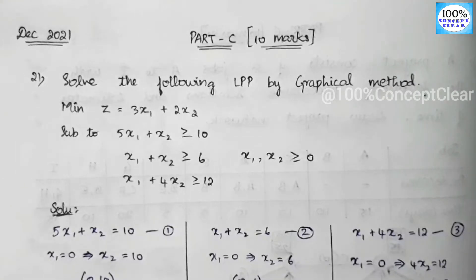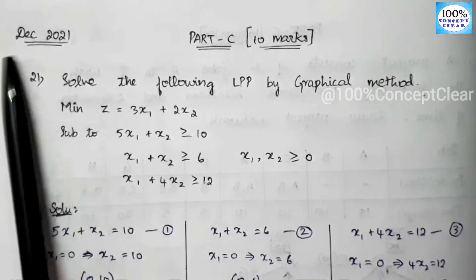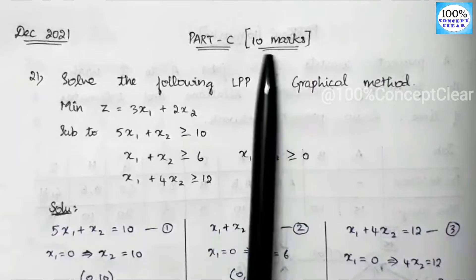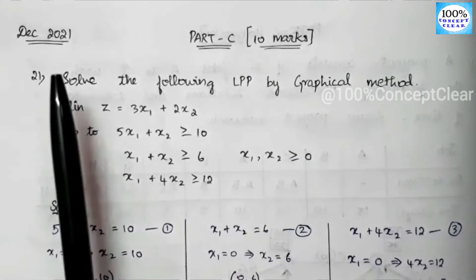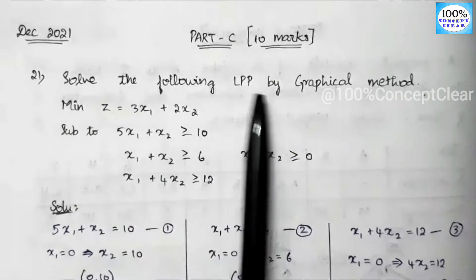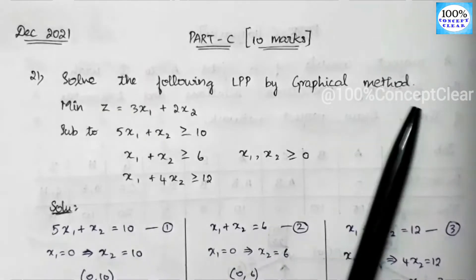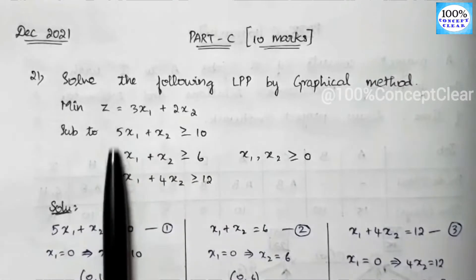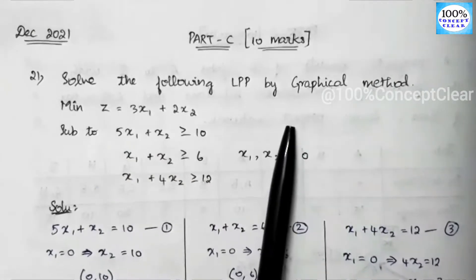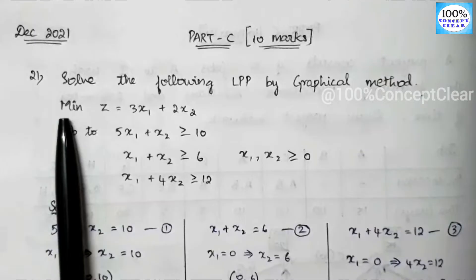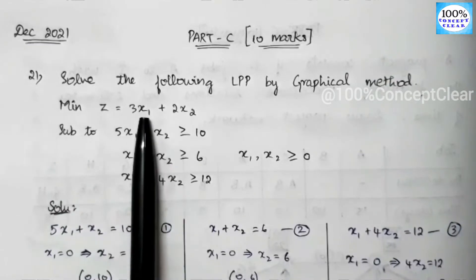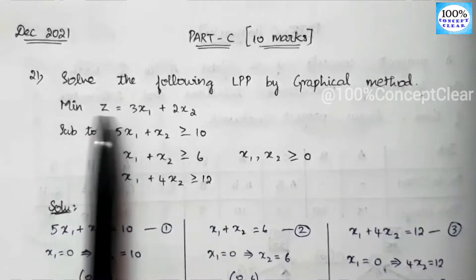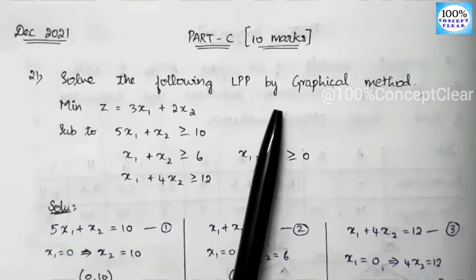Today's video is going to solve the Operational Research subject, December 2021, question number 5C, that is 10 marks, question number 21. So let's look at the question: Solve the following LPP by graphical method. LPP stands for Linear Programming Problem. Our objective function is minimum z equals 3x1 plus 2x2 — this is the minimum type of graphical method.